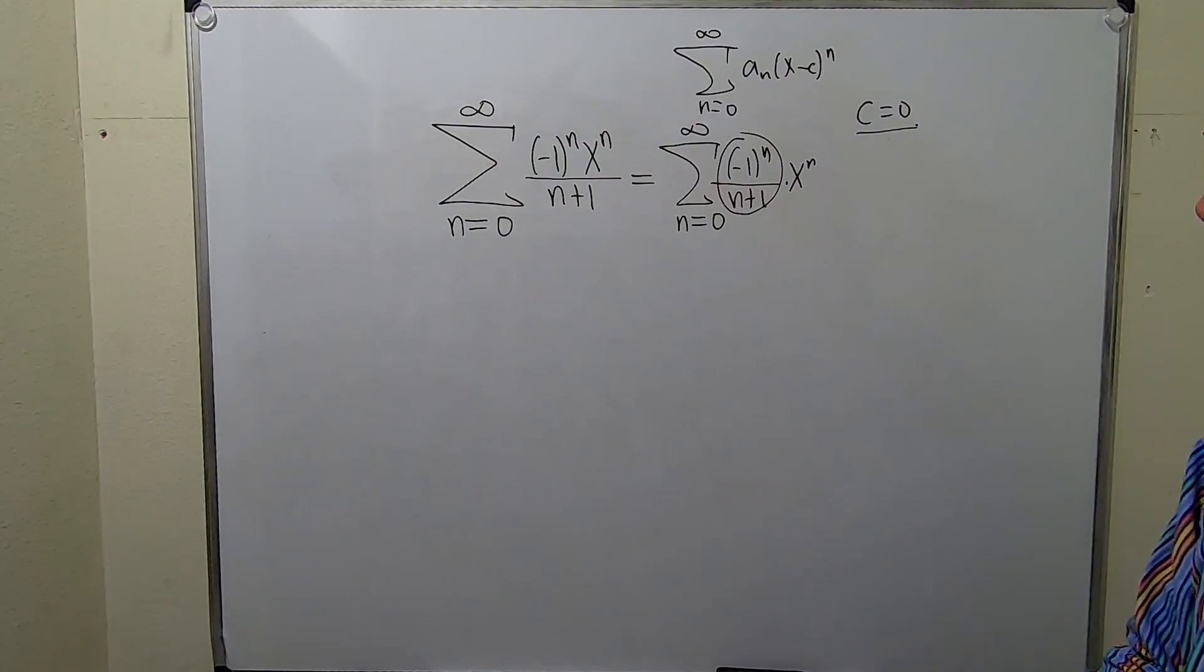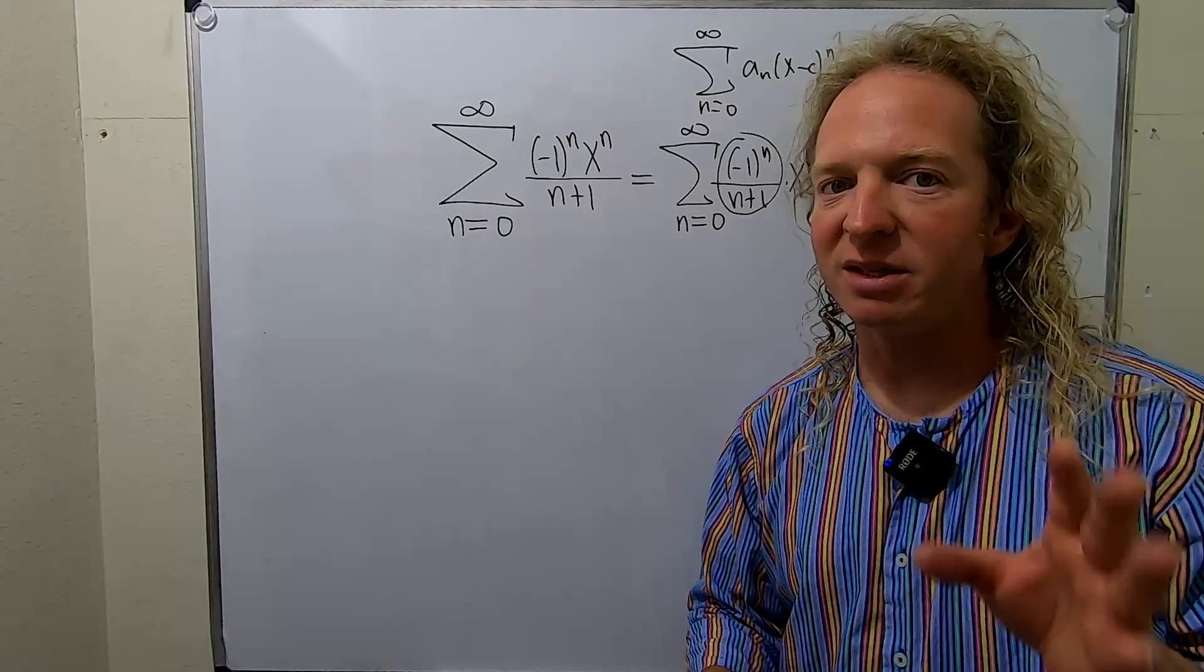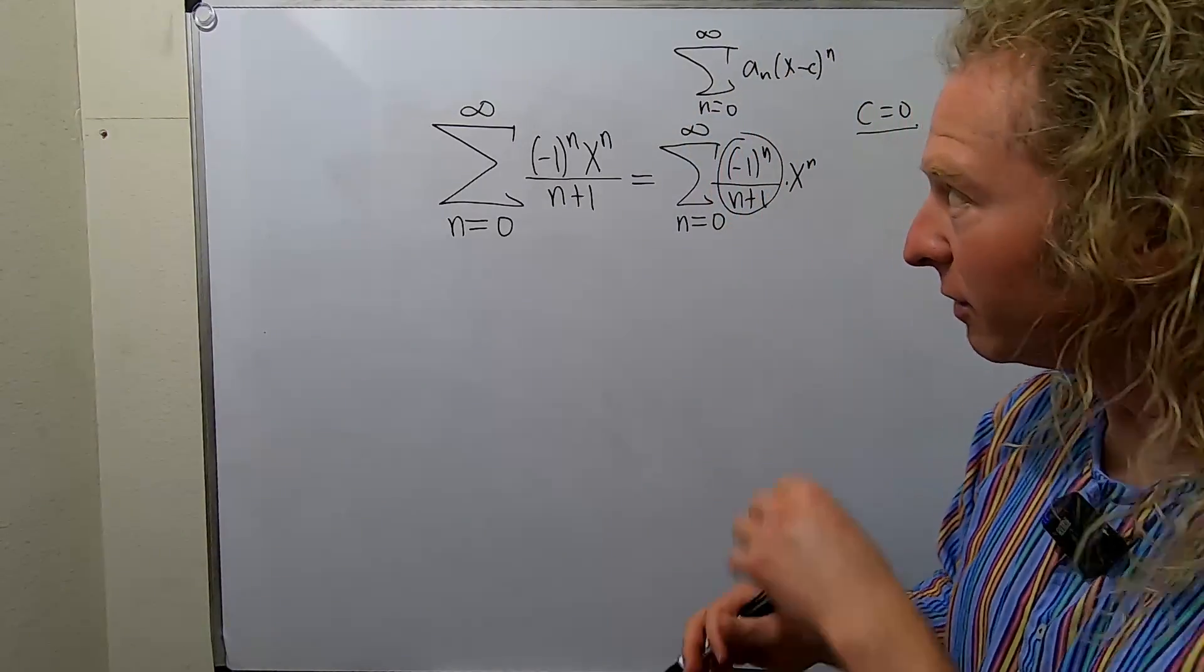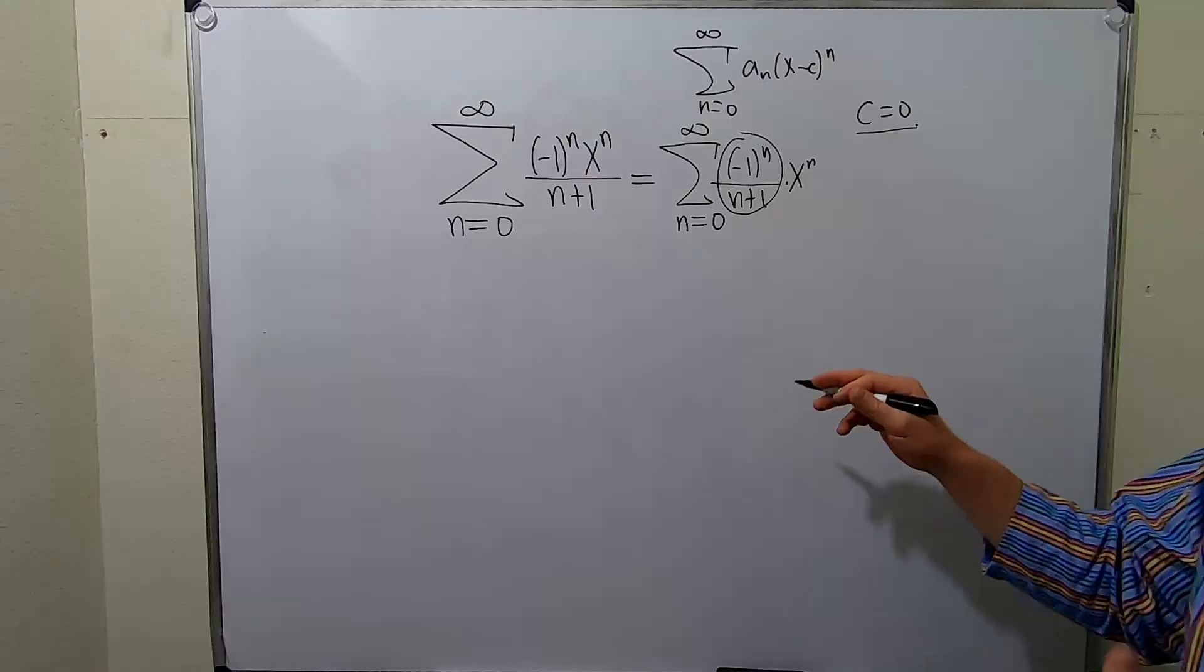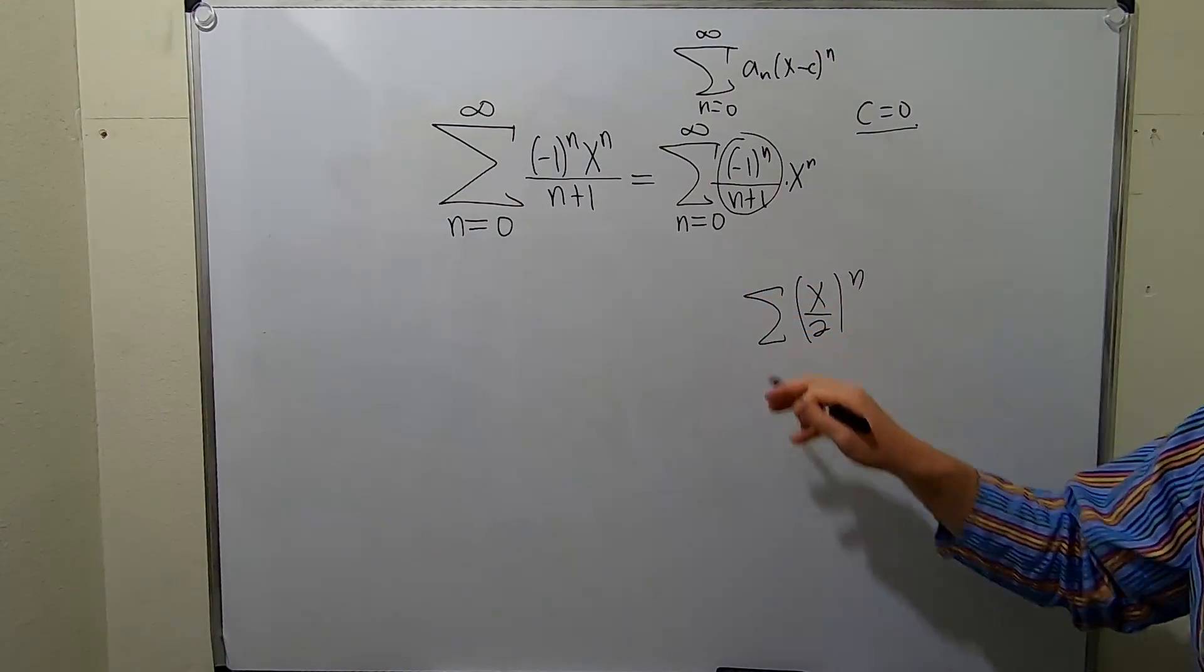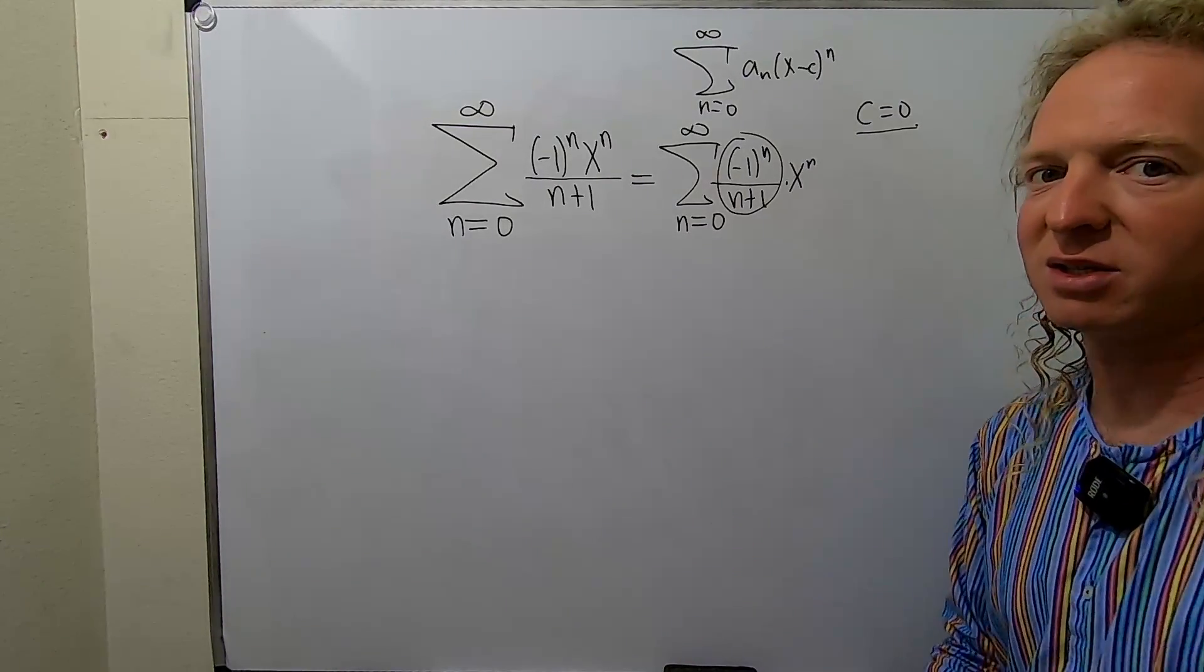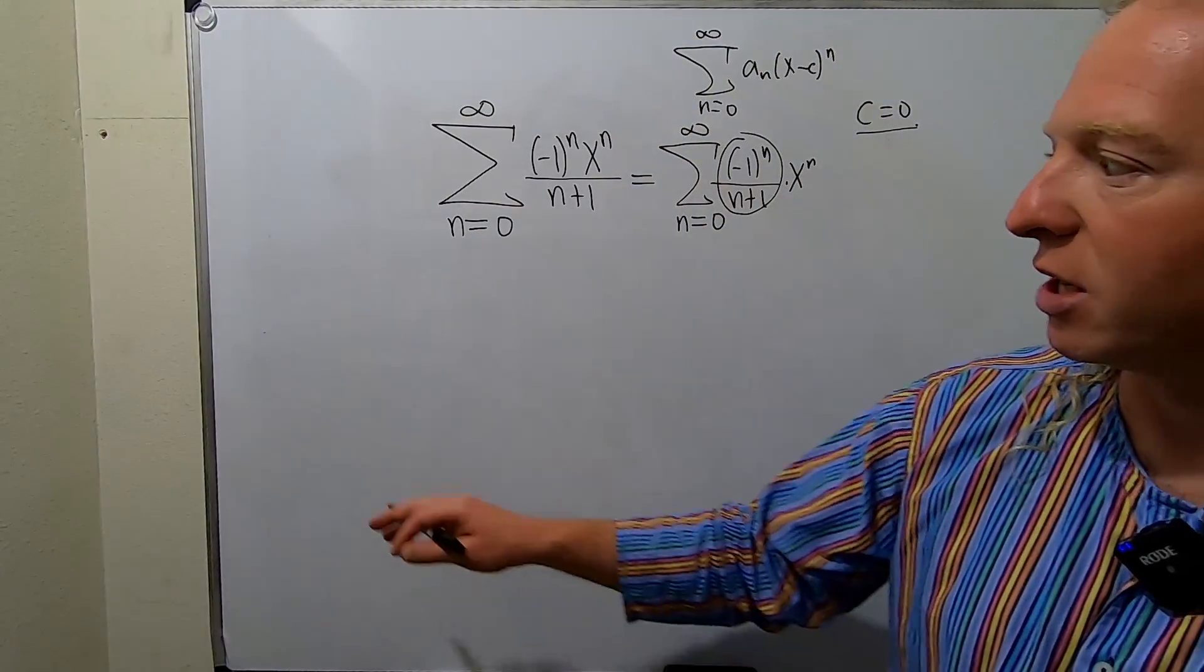To find the radius of convergence, typically what we use is the ratio test. If it's not geometric, which this is not, you typically use the ratio test. Geometric would be if the entire thing is to the nth power. When it's not something like this, you want to immediately jump to the ratio test. In fact, in theory you could always use the ratio test if you wanted to. So let's use the ratio test.